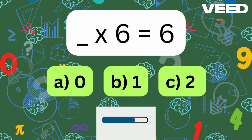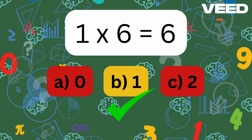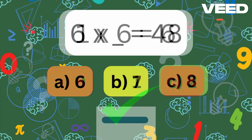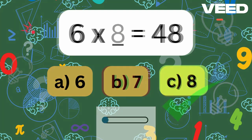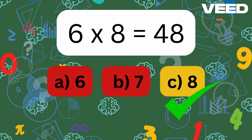What times 6 is 6? 1x6 is equal to 6. 6x what equals 48? 6x8 is 48.